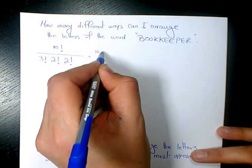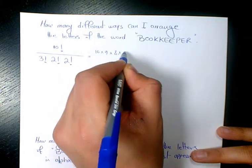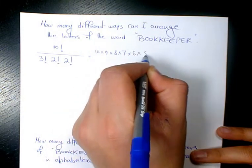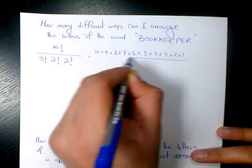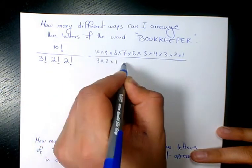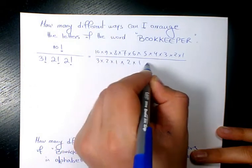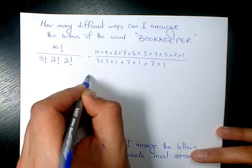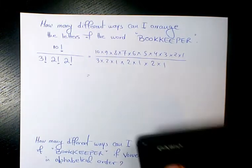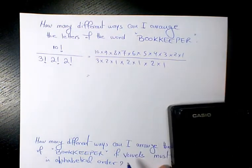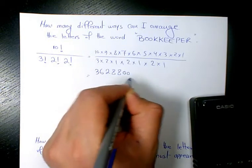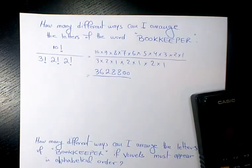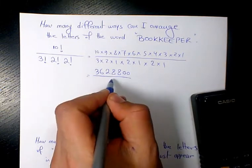So 10 factorial is going to be 10 times 9 times 8 all the way to 1, which gives us 3,628,800. Then the denominator is 3 factorial times 2 factorial times 2 factorial, which is 3 times 2 times 2 times 2, giving us 24.